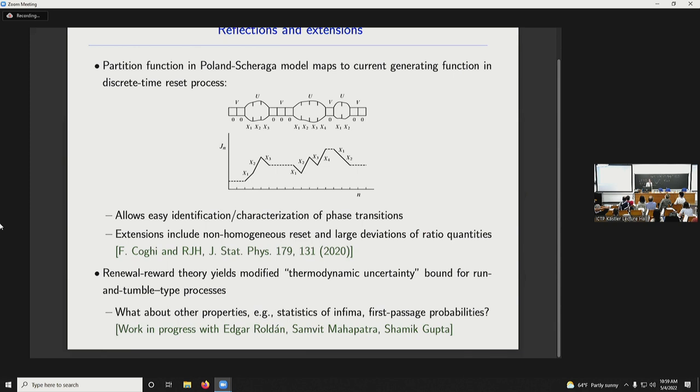So hopefully I've convinced you that you have this nice mapping for the partition function in this old DNA model to the current generating function in a reset model. And there's various other things you can do. I saw that Francesco was loitering online. You can think about large deviations of ratio quantities and non-homogeneous reset. And then I talked about thermodynamic uncertainty and what you learn from renewal reward processes. But there are many other properties you can think about for these run and tumble processes. And there's some work with Edgar and friends trying to unpick some of those that's ongoing. But let me stop there.